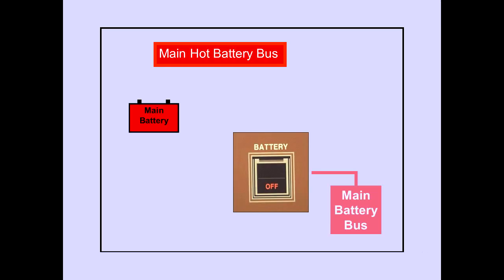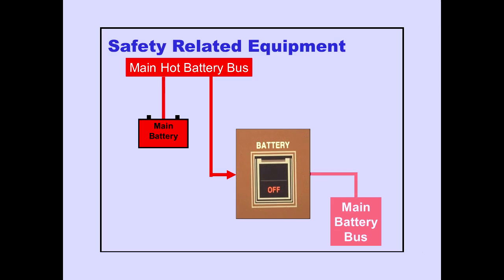Now let's discuss DC buses that can be powered by the airplane batteries. We'll discuss main battery buses first. Under certain conditions, the main battery can power the main hot battery bus and the main battery bus. The main hot battery bus is directly connected to the main battery and provides DC power to selected safety-related equipment, such as fire protection components.